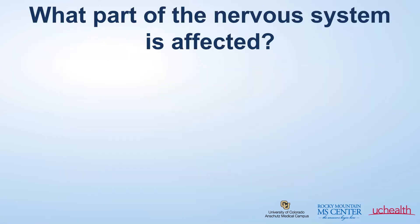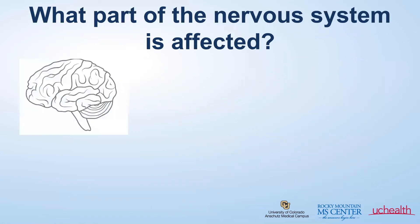What part of the nervous system is affected by autoimmune neurologic disease? Really, it can be any part of the neuro-axis. Starting with the brain — encephalitis, by definition, is inflammation of the brain. When the brain is affected, you can see problems with thinking and memory. Seizures are a very common presentation.